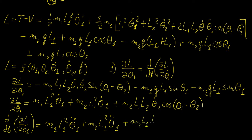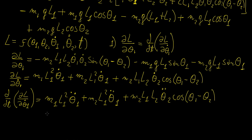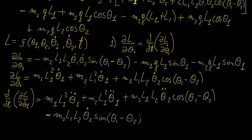Applying the product rule: first, differentiate theta2 dot to get M2 L1 L2 theta2 double dot cosine(theta1 minus theta2). Then differentiate the cosine using the chain rule, which gives minus M2 L1 L2 theta2 dot sine(theta1 minus theta2) times (theta1 dot minus theta2 dot). So you need both the product rule and then the chain rule to differentiate this term, yielding two components.